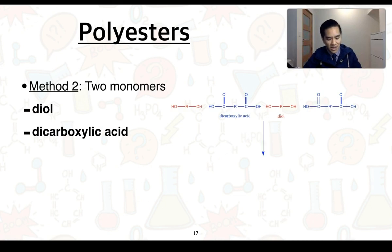So here we can see our two different monomers. We've got our dicarboxylic acid, our diol over here, all lined up with one another.